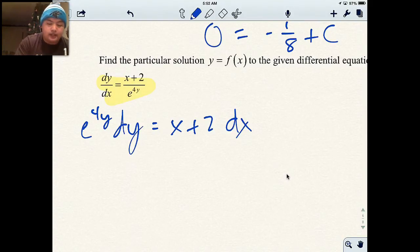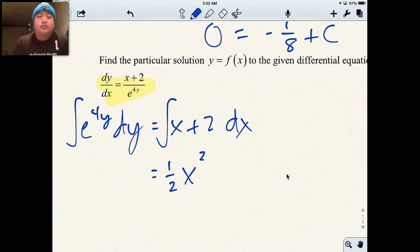Then I apply the anti-derivative to both sides. The left side in this case is easier. If I take the anti-derivative x, I add 1. This becomes x squared. And divide by 2. So this becomes half x squared. And the anti-derivative of 2 is 2x and then plus c.